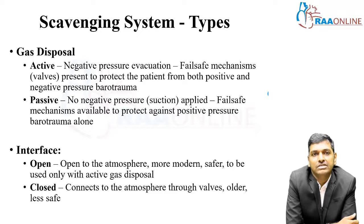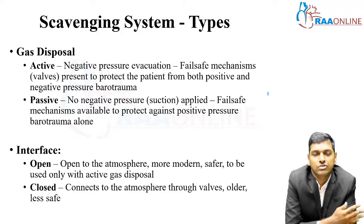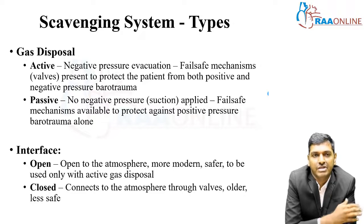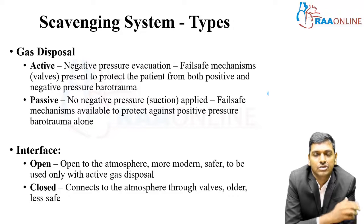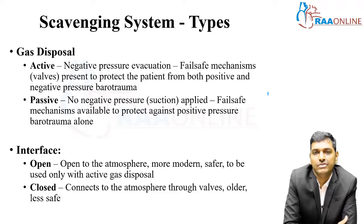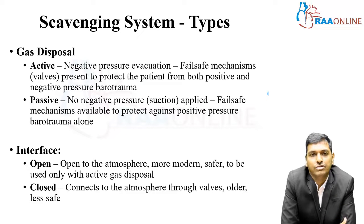In passive gas disposal, there is no negative pressure or suction applied. The fail-safe mechanism is available to protect against positive pressure barotrauma alone because there is no suction. The gas flows due to passive pressure differential alone from the APL valve and the ventilator into the scavenging system, which pushes the gases out of the operating room.